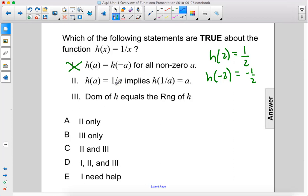Let's try statement two. h of a equals 1 over a implies that h of 1 over a equals a. So if we were to plug 1 over a into this function, we would get 1 over 1 over a.